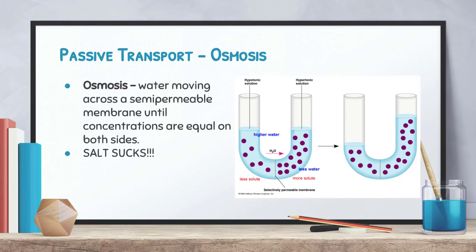Instead of the purple molecules moving left, the water is going to move in the opposite direction. This doesn't result in an equal number of purple molecules on each side, but it does give an equal concentration — the same number of purple parts per unit of water. On the right side there are more purple dots but also more water, which evens out the concentration. An easy way to remember the direction water flows in osmosis is the concept of 'salt sucks' — water moves toward the higher concentration to dilute that side.